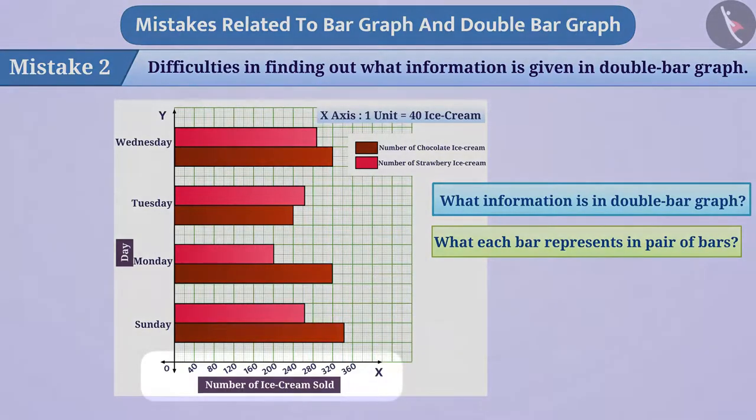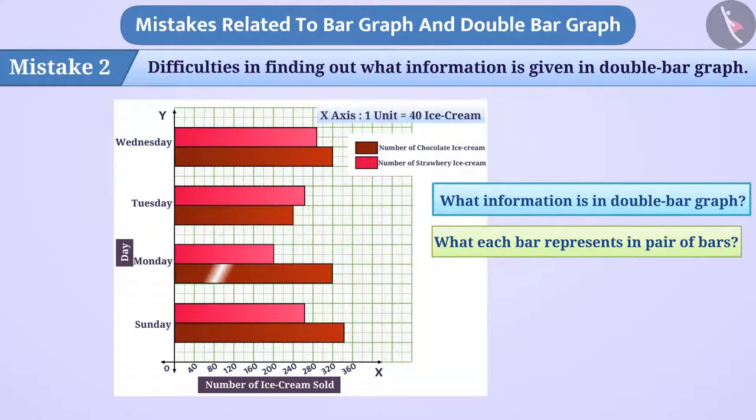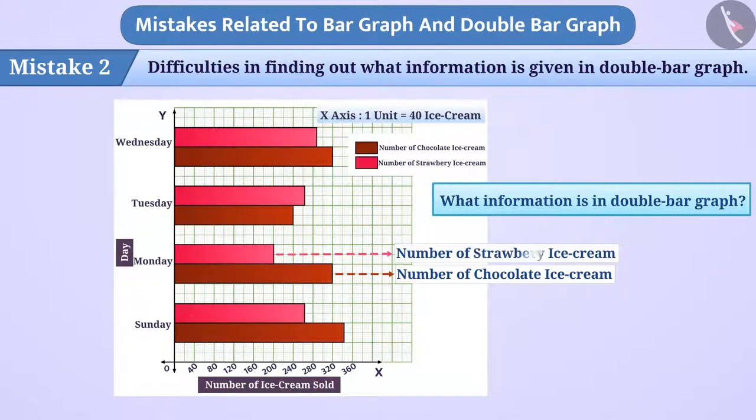Here, the number of ice creams sold is shown on the x-axis and the days are shown on the y-axis. The brown bar represents the number of chocolate ice creams and the pink bar represents the number of strawberry ice creams.